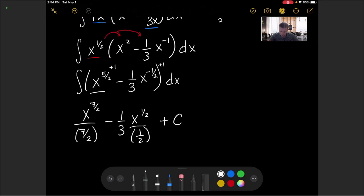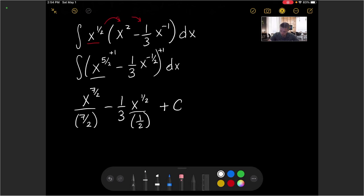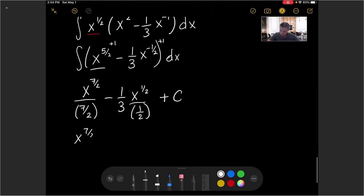So let's clean this up just a little bit to rewrite. We have x to the 7 over 2. If I flip and multiply here, we'll have 2 and then divide by 7.